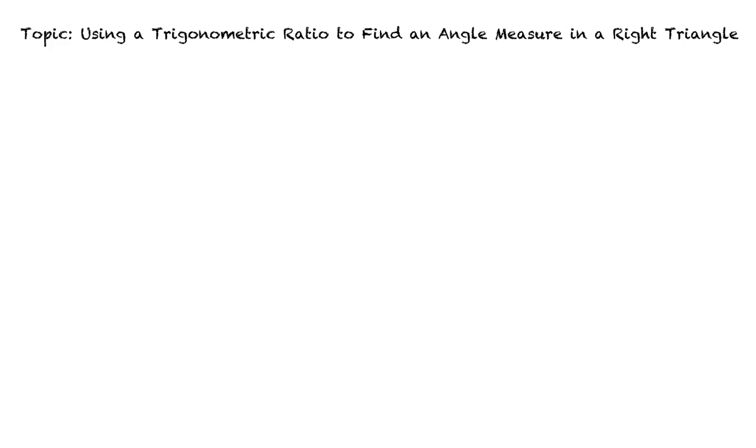This video will cover the topic using a trigonometric ratio to find an angle measure in a right triangle. Let's take a look at an example problem to get an idea of what this topic covers. We are given a right triangle like the one shown below and asked to find x and round our answer to the nearest tenth of a degree.